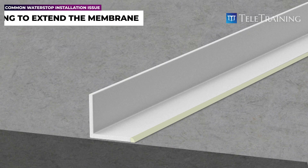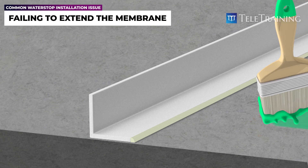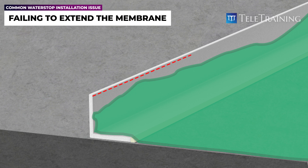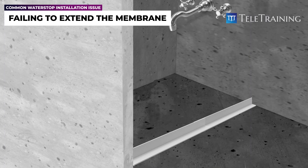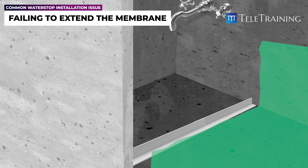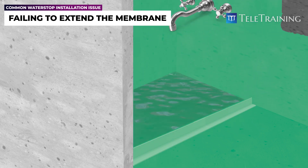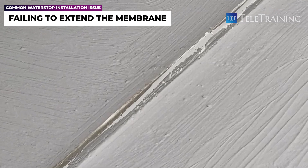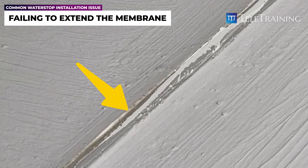Another common oversight is failing to extend the membrane properly up to the water stop angle. The primary purpose of the water stop angle is to allow the membrane to be applied vertically, creating a watertight tank or water vessel. If the membrane is not extended over the water stop, there is a significant risk of failure at the corner, compromising the entire waterproofing system.